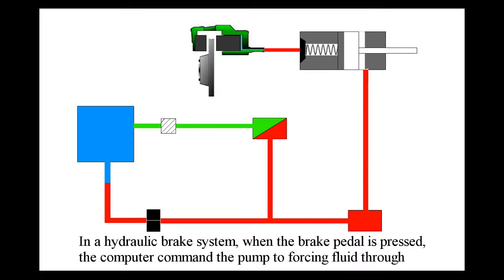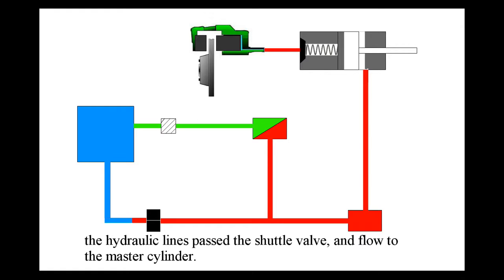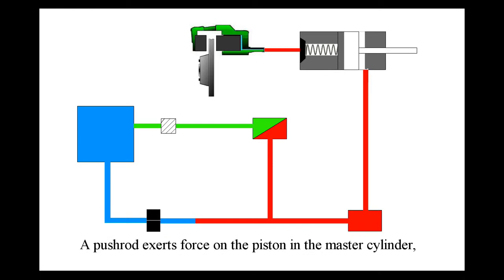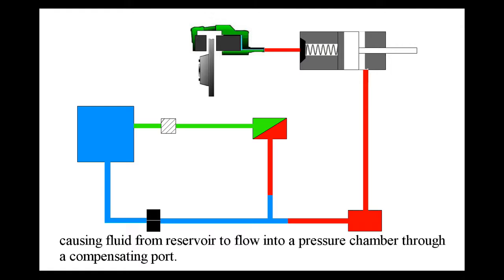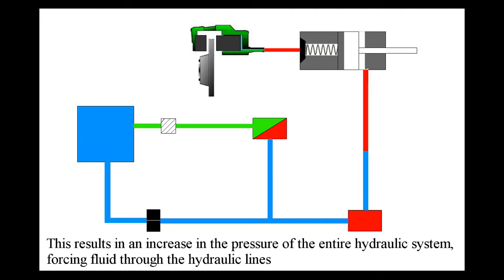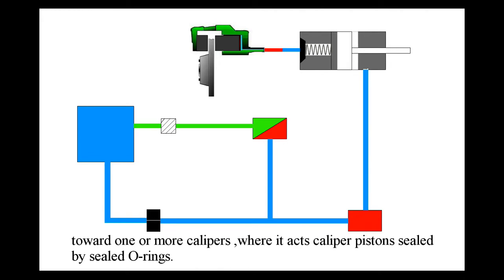In the hydraulic brake system, when the brake pedal is pressed, the computer commands the pump to force fluid through the hydraulic lines to the shuttle valve and flow to the master cylinder. The piston exerts force on the piston in the master cylinder, causing fluid from the reservoir to flow into a pressure chamber through a compensating port. This results in an increase in the pressure of the entire hydraulic system, forcing fluid through the hydraulic lines towards one or more calipers.